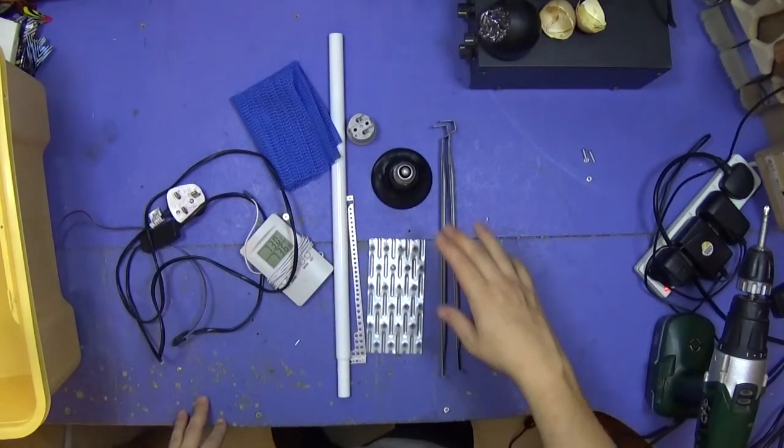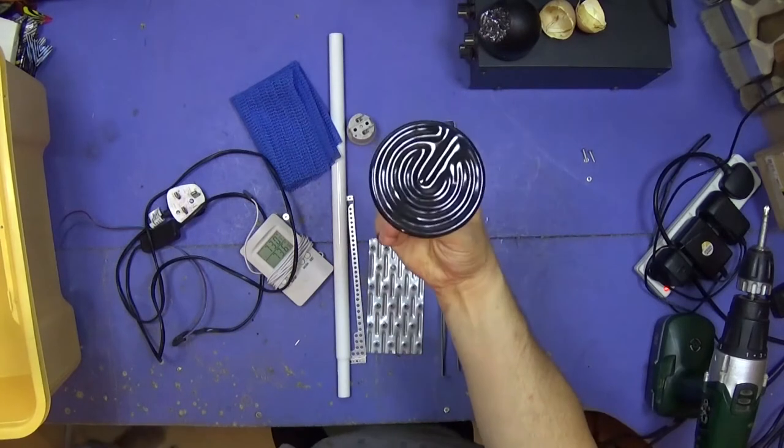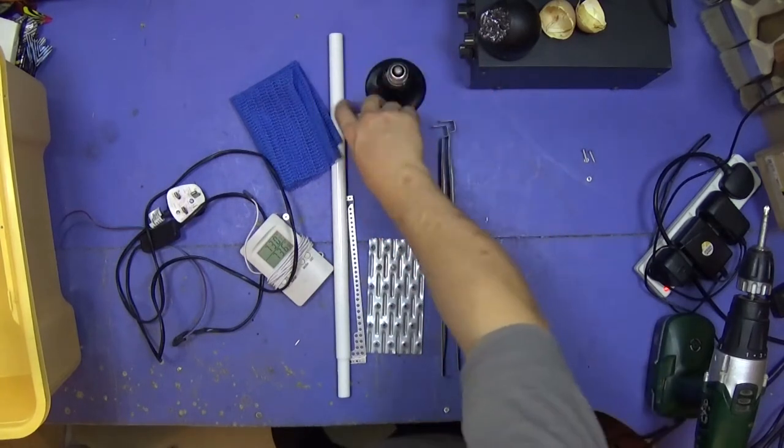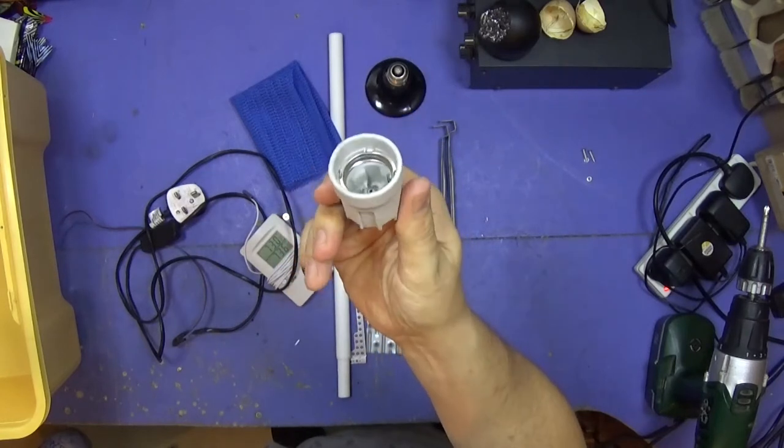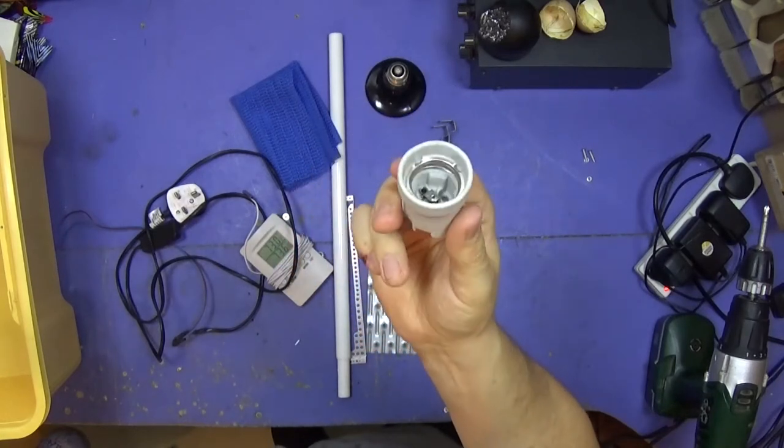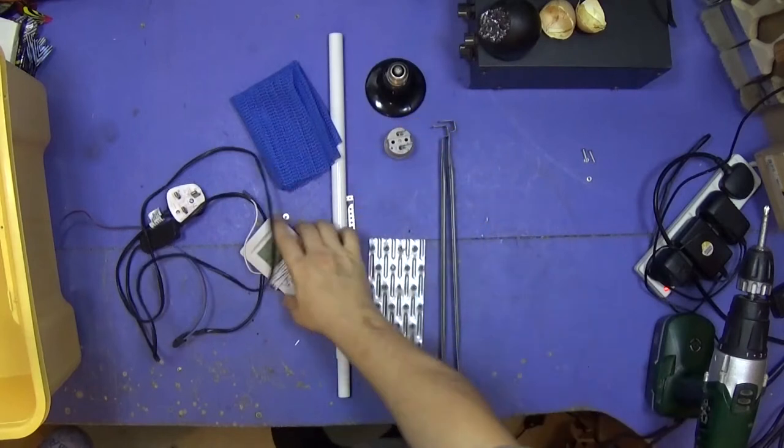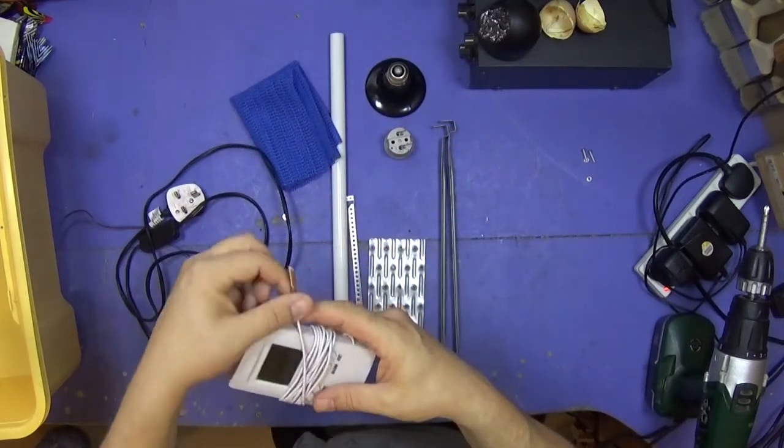I've got a heat lamp, a heat bulb, and a ceramic holder for it. Be careful—it has to be ceramic because a plastic one would melt. I've got a thermometer with indoor and outdoor temperature so I can gauge the exact temperature on the inside.